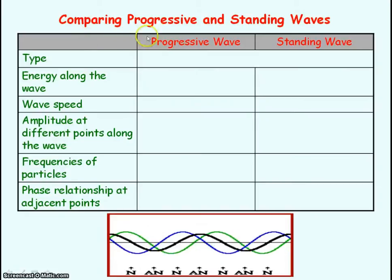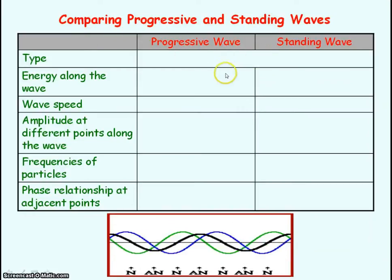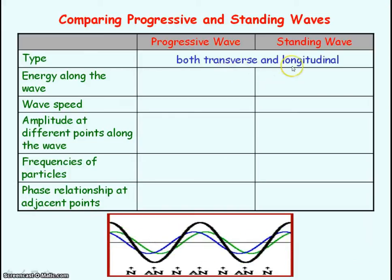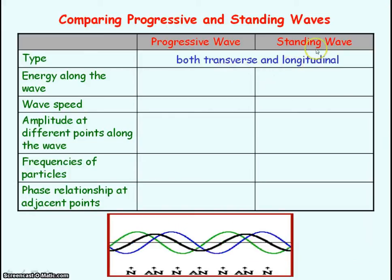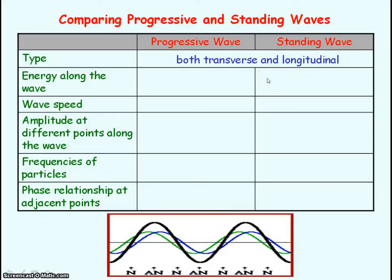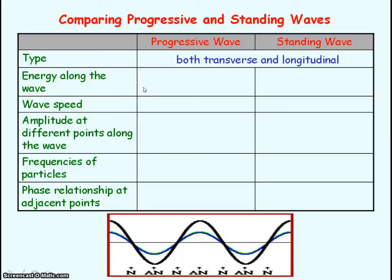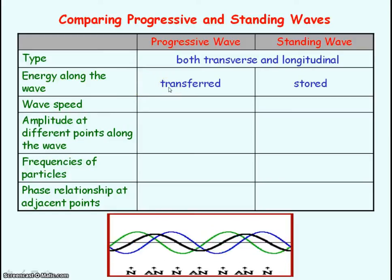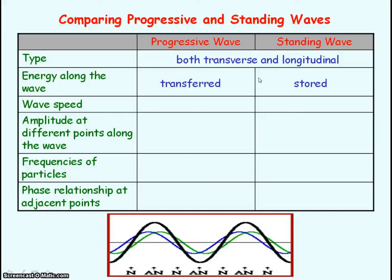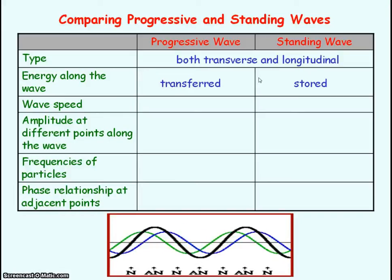We're now going to compare progressive waves with standing waves. Both can be either transverse or longitudinal — sound waves can produce standing wave patterns and sound waves are longitudinal. Regarding energy: progressive waves transfer energy from one point to another, whereas standing waves store energy along the wave. Energy is not being transferred from one place to another because the wave is stationary.